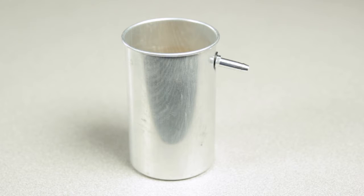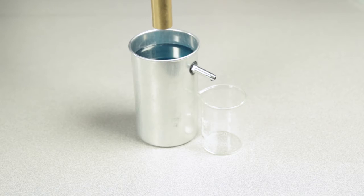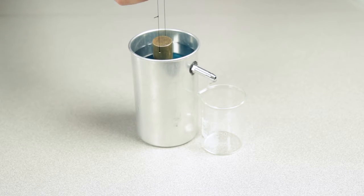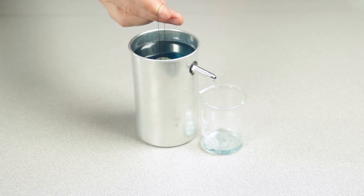The SE-8568 overflow can is used to make direct volume measurements of a submerged object by dispensing a volume of fluid equal to that displaced by the submerged object.